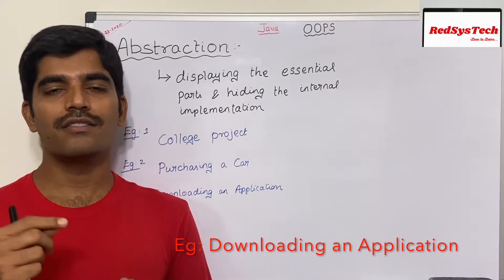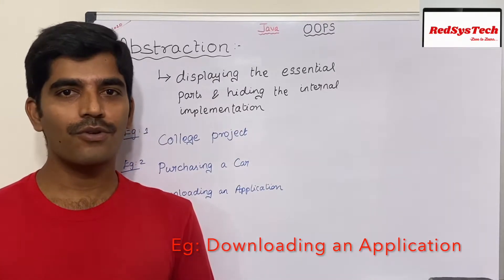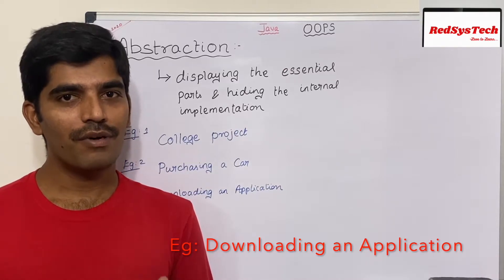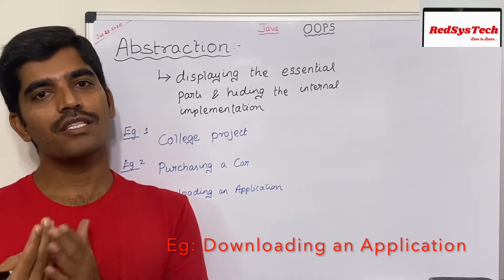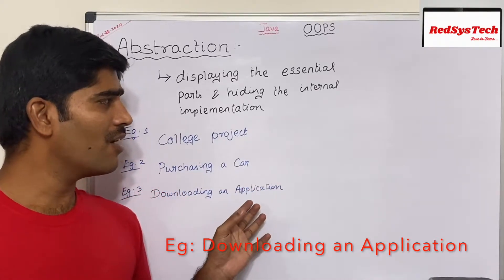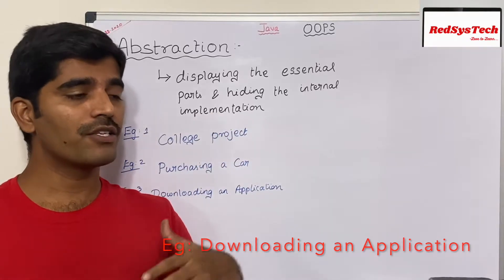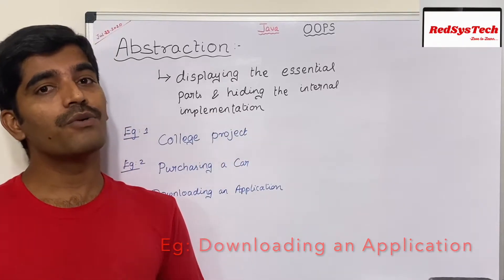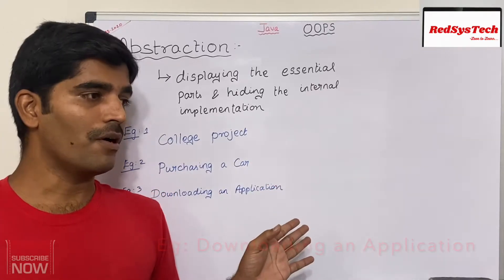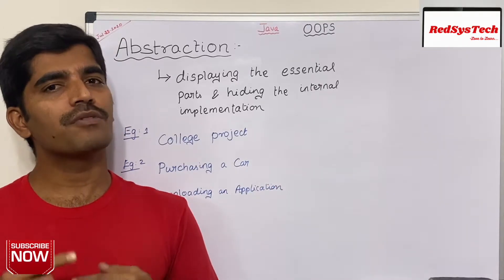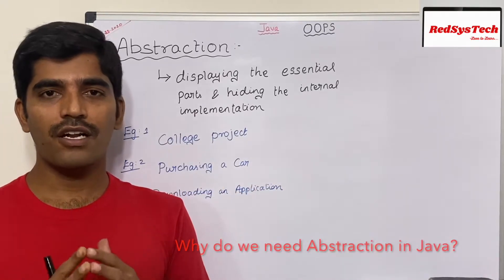Similarly, there is another example: downloading an application. Say you download an application from the App Store or Google Play Store and you get it as an .exe or .apk file. You don't exactly need to know how it was implemented by the developers, but you are still using the features of the application. This is called abstraction — in Java, you don't need to know how it's implemented in the background, but you use the features it offers.